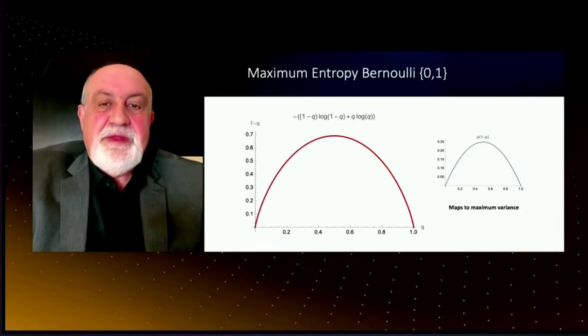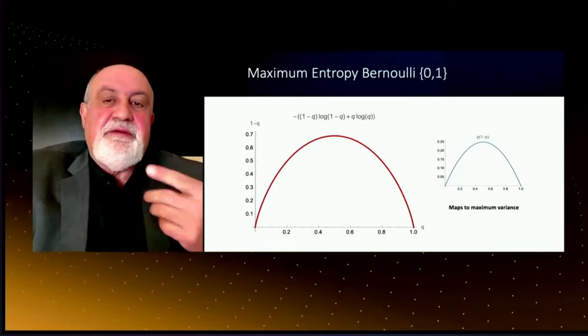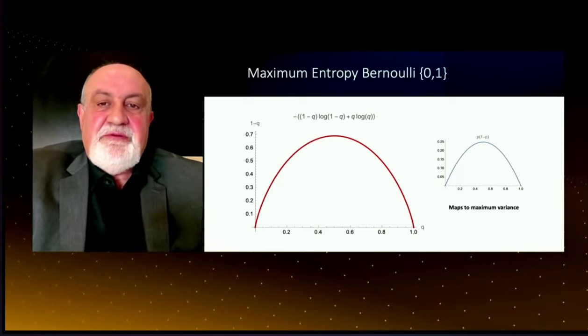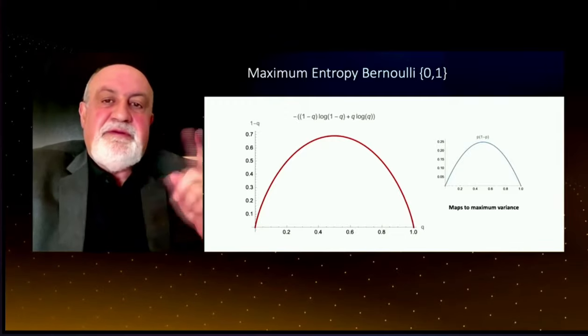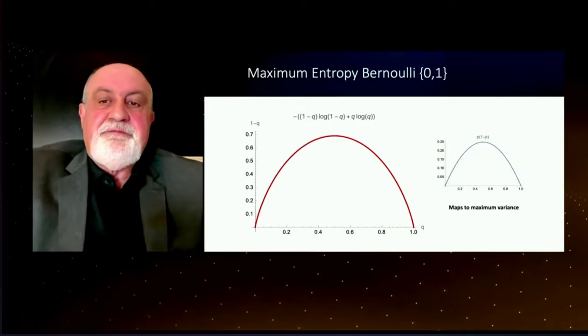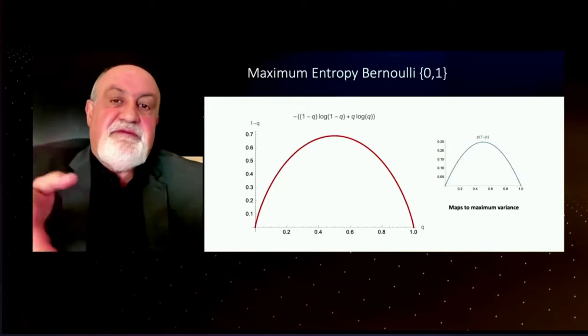So we start with maximum entropy. Well, everybody's familiar with maximum entropy probability. When you have a Bernoulli, you know, zero one with probability q, one minus q, visibly the maximum ignorance is 50-50.